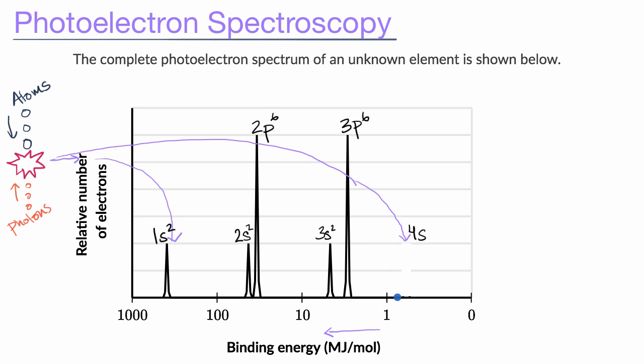So that's what the photoelectric spectrum for potassium would look like. Instead of this being 4s2, this would be 4s1 here. And so you could see, when you have two electrons, you get about that high, and now when you have one electron, you get about that high.